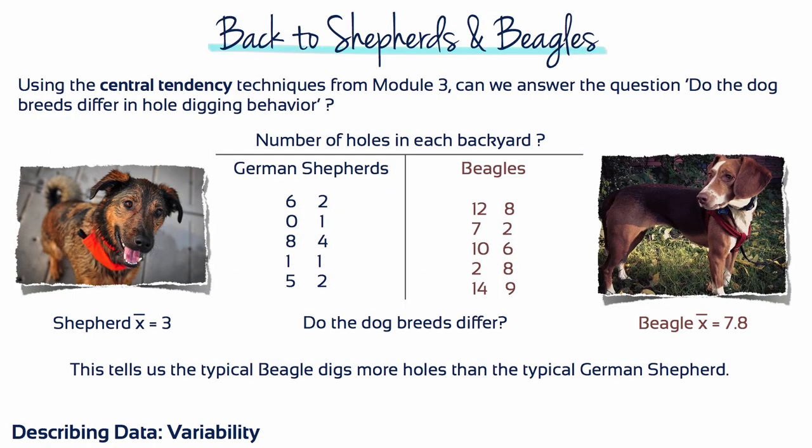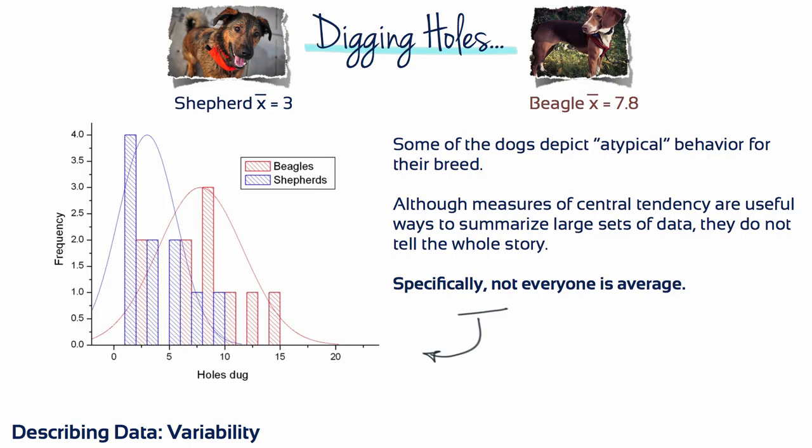Although the measures of central tendency from module 3 were handy ways to summarize the data from our whole digging experiment, these measures don't tell the whole story. Looking at this histogram again, we can see that the typical beagle digs an average of roughly 8 holes, and the typical German Shepherd digs an average of roughly 3 holes, yet some of the dogs depict atypical behaviour for their breed.